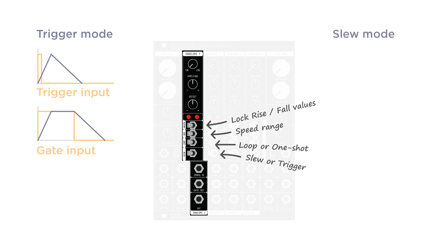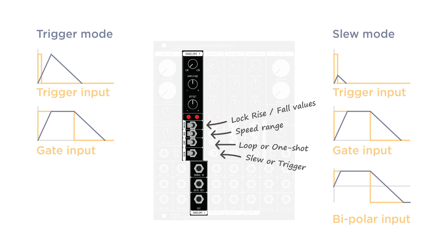In slew mode, the module follows the value of the incoming voltage but limits voltage changes according to the rise and fall times. So if you feed the module a short trigger or short gate, the output goes up according to the set rise time, but as soon as the input goes back to zero, the output starts going down according to the set fall time — even if it didn't complete the full rise or fall stage. However, in this mode you can also feed the channel a bipolar signal, like an audio signal, bipolar square wave LFO, or sample and hold signal — in this case it will function as a slew limiter. Because each channel only has a single input that you can feed anything from triggers and gates to audio and CV, setting the right combination between these switches is crucial to get the desired effect.